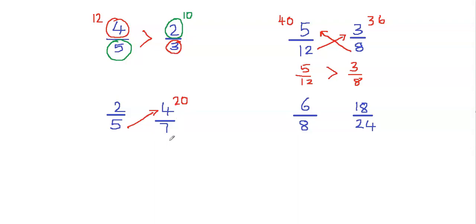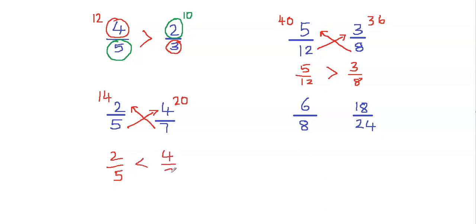Then we're going to multiply the denominator of this fraction with the numerator of this fraction. So 7 times 2 would give me 14. We got the product. Now we're going to compare the products. We know that 14 is smaller than 20, so we can say that the fraction 2 fifths is smaller than 4 sevenths, or 4 sevenths is greater than 2 fifths.